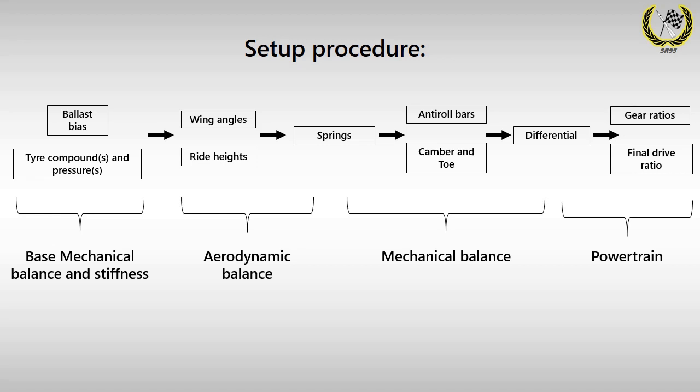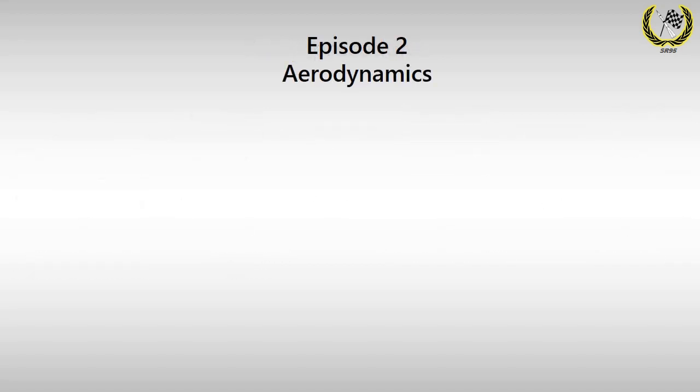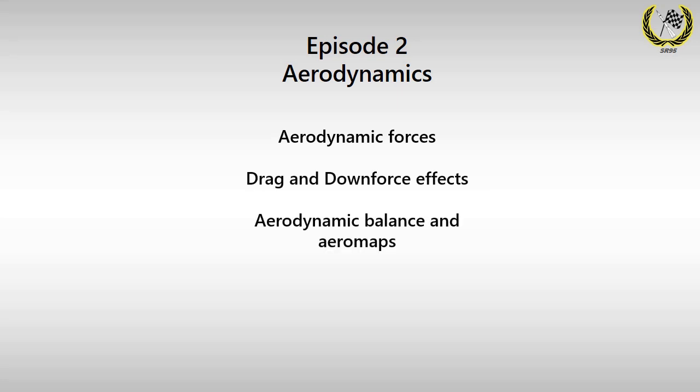The last step is to control wheel RPM variation through optimized gear ratios and final drive values. Once again, we'll get to these parameters in the upcoming videos. This is just an overview of what you can expect for the rest of the series. In the next episode, we'll look at the importance of aerodynamics and how to set up wing angles to suit your driving style and the circuit.